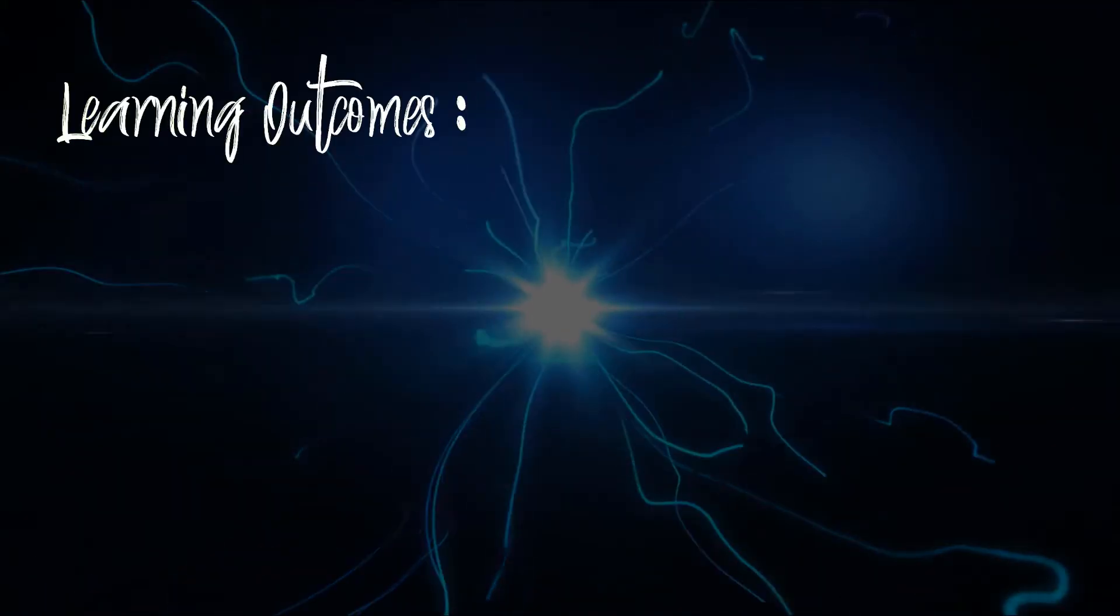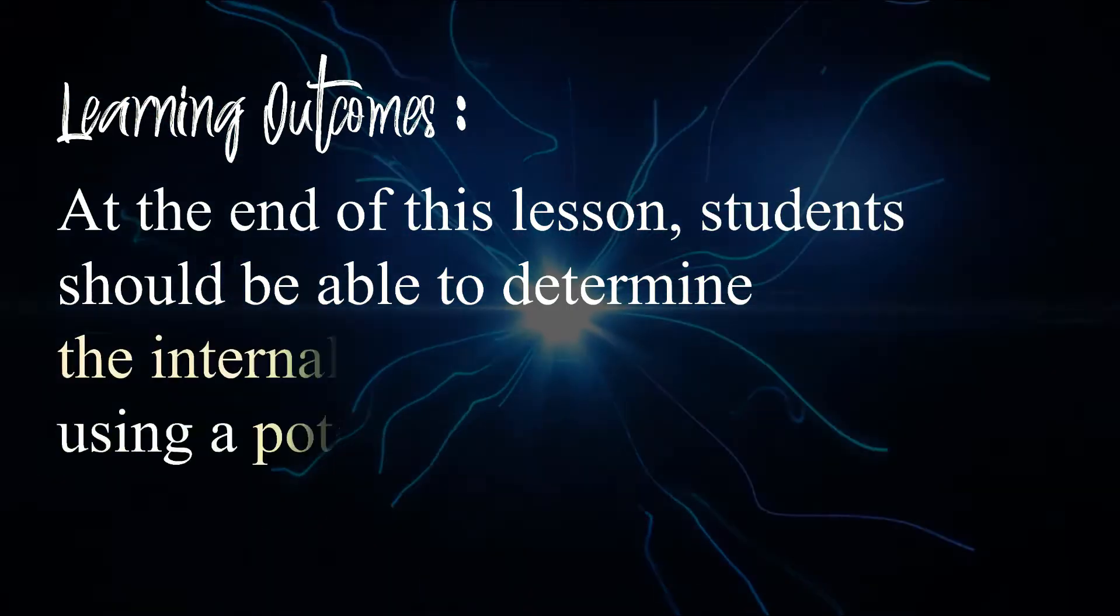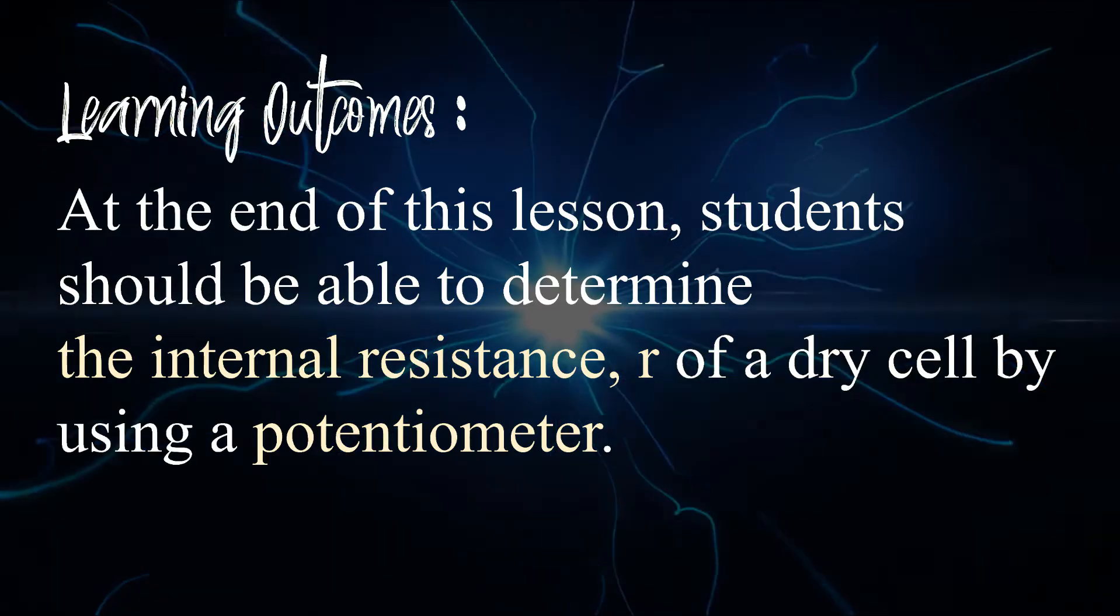The learning outcome for this experiment is, at the end of this lesson, students should be able to determine the internal resistance of the dry cell by using a potentiometer.